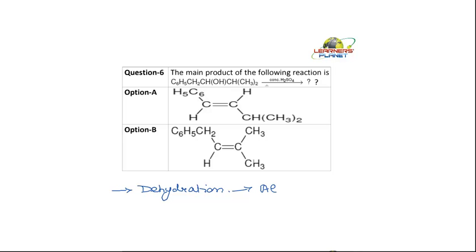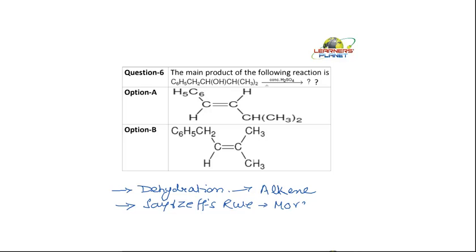This dehydration takes place and what is formed? An alkene is formed. Now, which alkene is more stable according to Zaitsev's rule — or you can say Saytzeff's rule? The more substituted alkene is more stable.